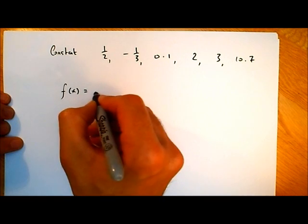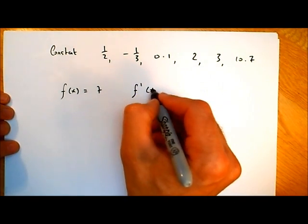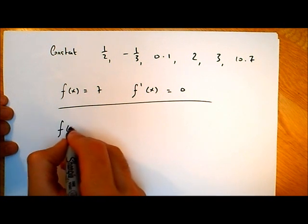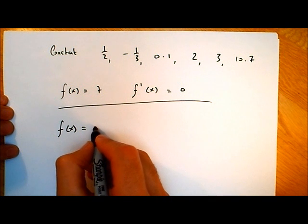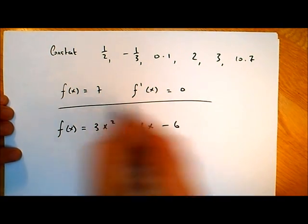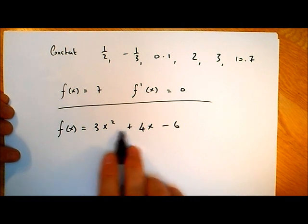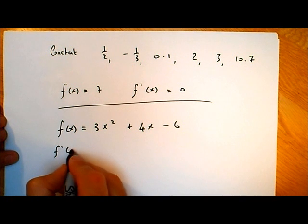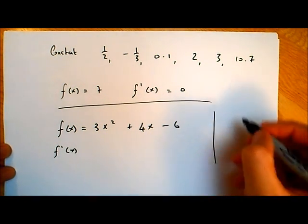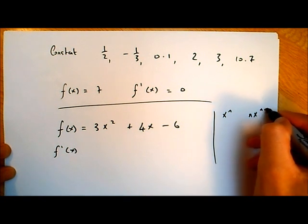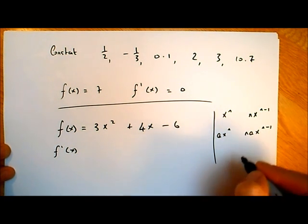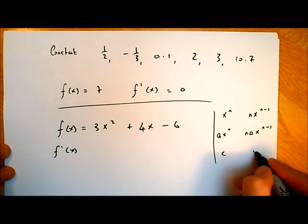So if f of x is equal to 7, then f dash of x is equal to 0, since 7 is a constant. Now let's say we have a sum: f of x is equal to 3x squared plus 4x minus 6. We want to find f dash of x — a formula for the slope of that curve. The rules are: x to the power of n differentiates to nx to the power of n minus 1; ax to the power of n differentiates to n times ax to the power of n minus 1; and a constant c differentiates to give 0.